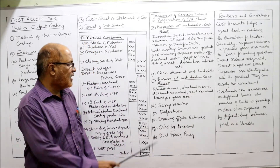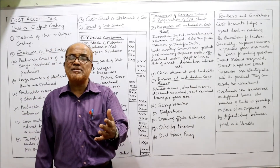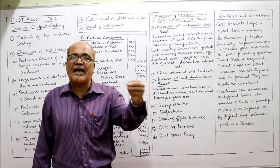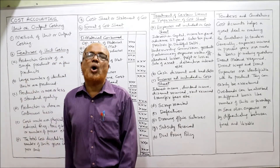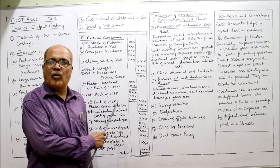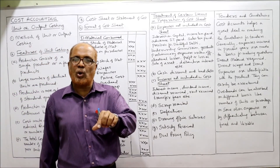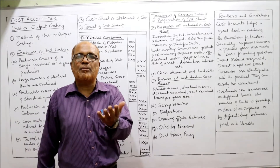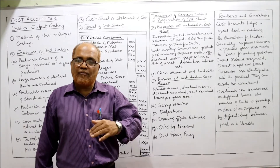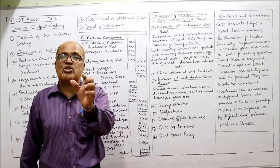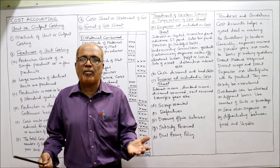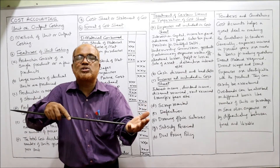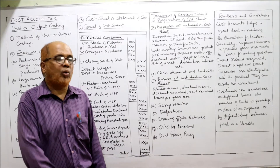Regarding scrap: if material is sold as scrap, the sale proceeds are deducted from material consumed or from factory overhead. Regarding defectives: during processing, some defective items are normally produced and extra cost is incurred to rectify them. This rectification cost for defective goods is treated as part of factory overhead.